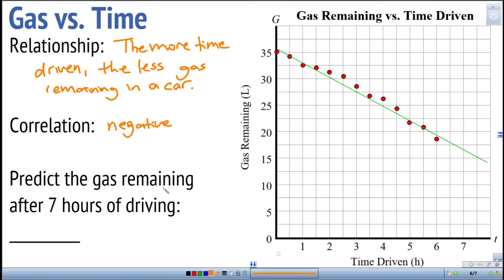Let's use the line of best fit to predict the gas remaining after seven hours of driving. There are no dots around seven hours, so this is an extrapolation, but the line follows the pattern so it's reasonable. Going up to seven on the axis and reading across to the line, the gas remaining is about sixteen to sixteen and a half units.